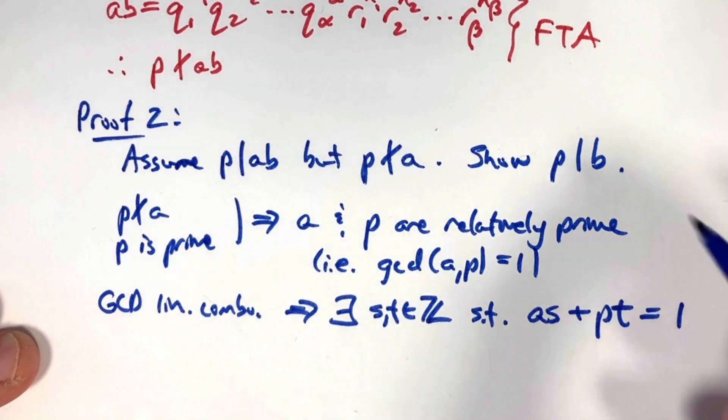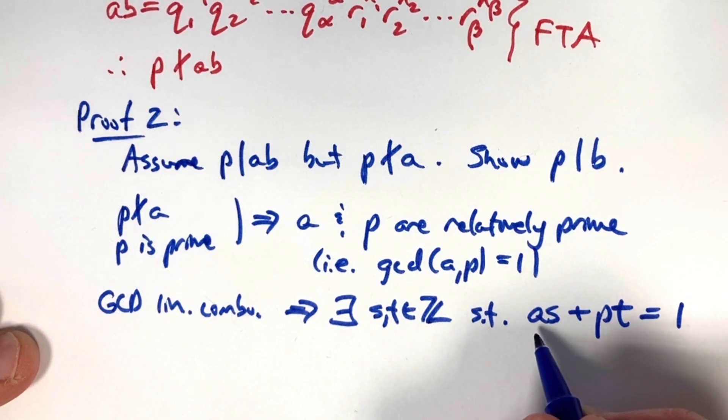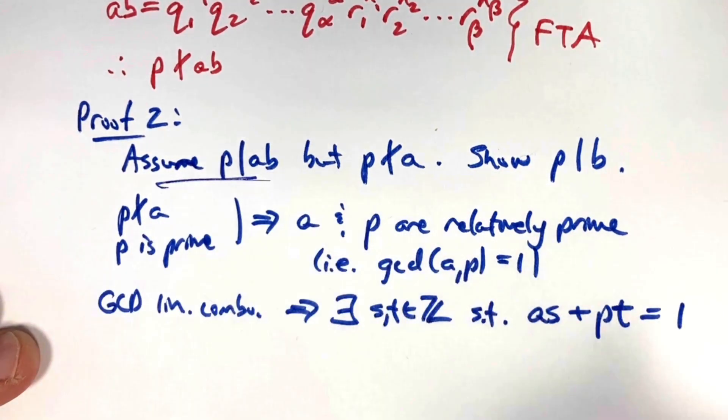What's our goal again? Our goal is to show p divides b. p does divide p times t. p doesn't divide one. Does p divide that? Well, if we multiply it by b, it would, because we're assuming p divides a times b.